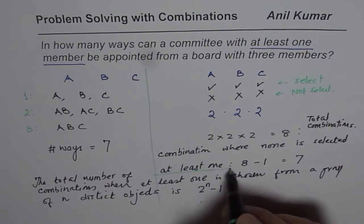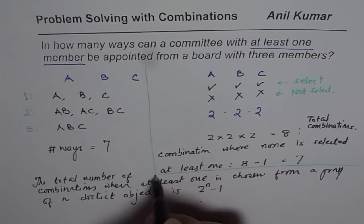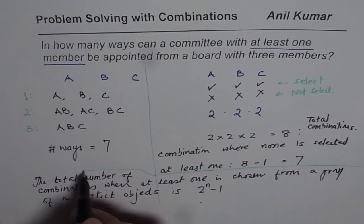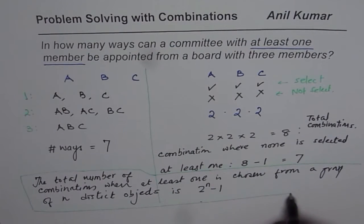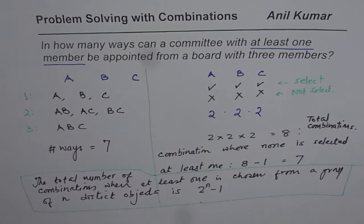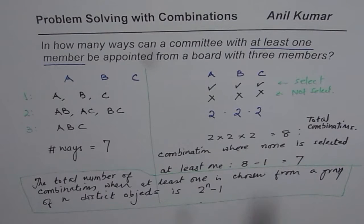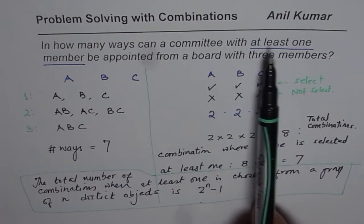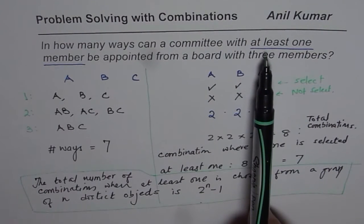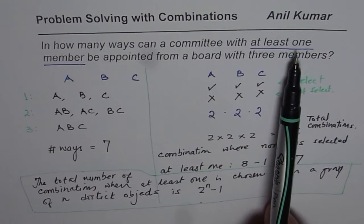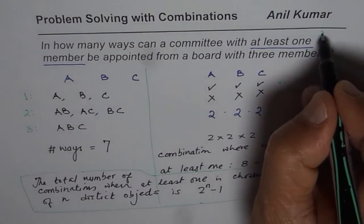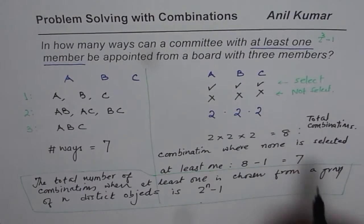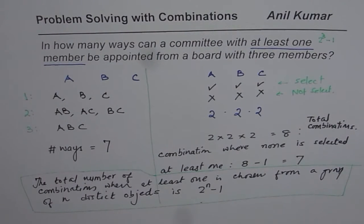So that is the kind of rule which we have understood from this particular example. So in our case, if there are three members in the committee, and we need to select with at least one member, then the answer is two to the power of three minus one, which is seven. So that's a quick way of finding answer for such questions.